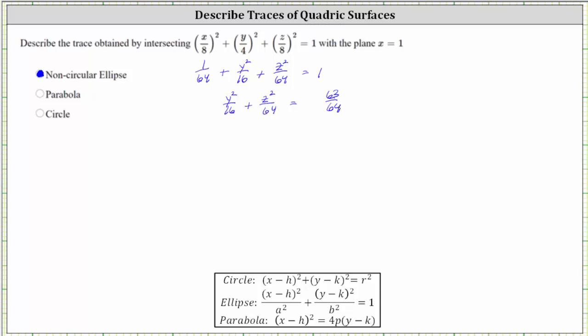Looking at the equation of the ellipse, we need the right side to equal one. So let's multiply both sides of the equation by the reciprocal of 63/64, which is 64/63.